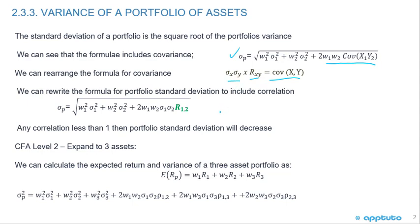So we can rewrite the portfolio standard deviation formula as: weight 1 squared times variance 1, plus weight 2 squared times variance 2, plus 2 times weight 1 times weight 2 times standard deviation 1 times standard deviation 2 times the correlation. With any correlation less than 1, the portfolio standard deviation will decrease. In CFA Level 2, they expand to the 3-asset portfolio — that's just an FYI.